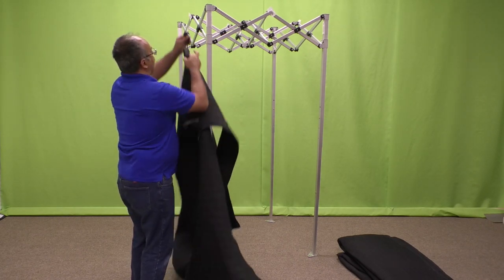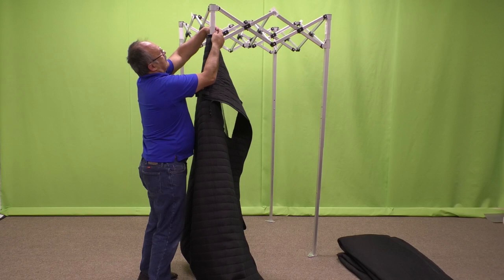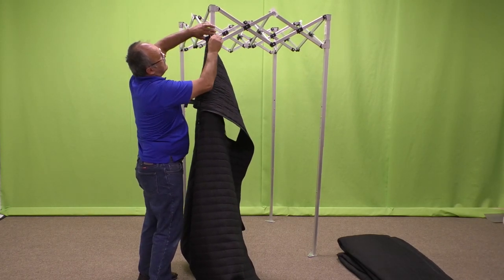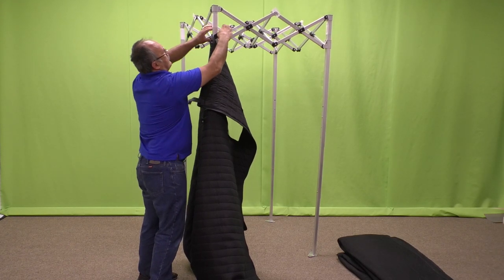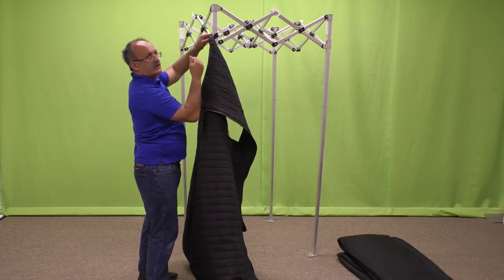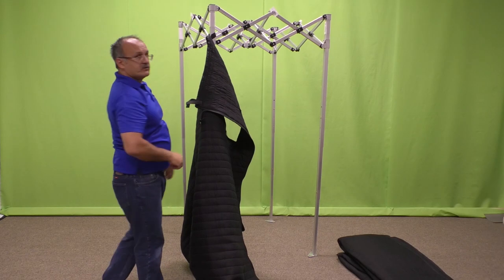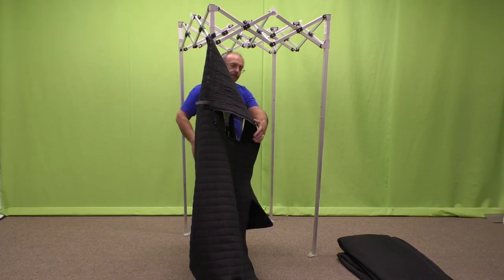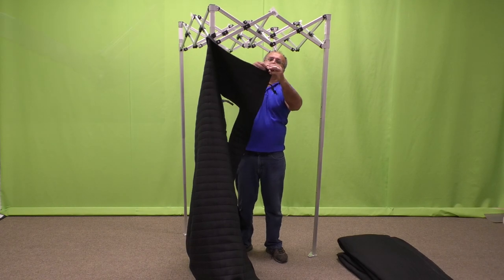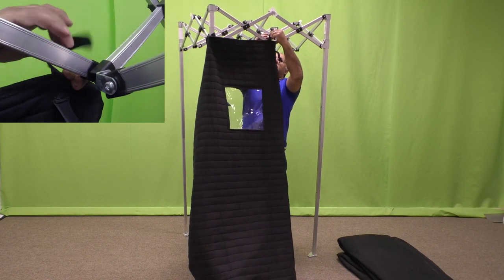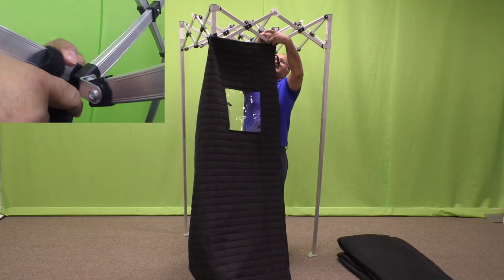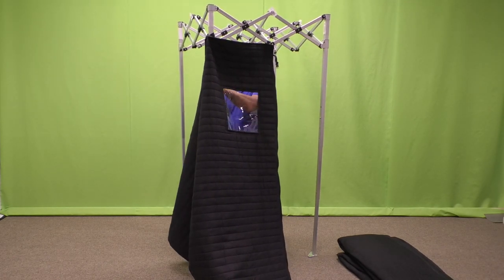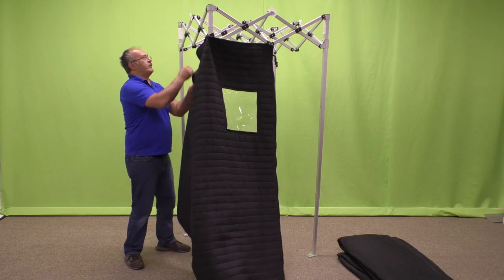So you take one, wrap the loop Velcro, the soft one, around the first, hold it, and then apply the hook Velcro, the hard one, over it. And it's going to hold it in place. Next, apply the front panel in the same manner and it goes right in the middle. Then, in a similar manner, apply all the other tie-ups.